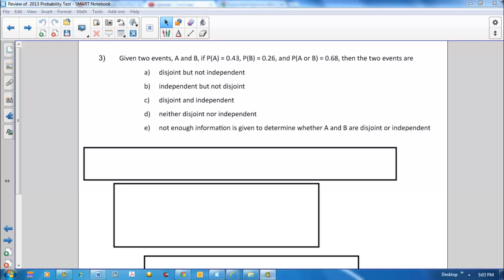Probability test, multiple choice question number 3. Given two events A and B, if the probability of A equals 0.43, probability of B equals 0.26, and probability of A or B equals 0.68, then the two events are: